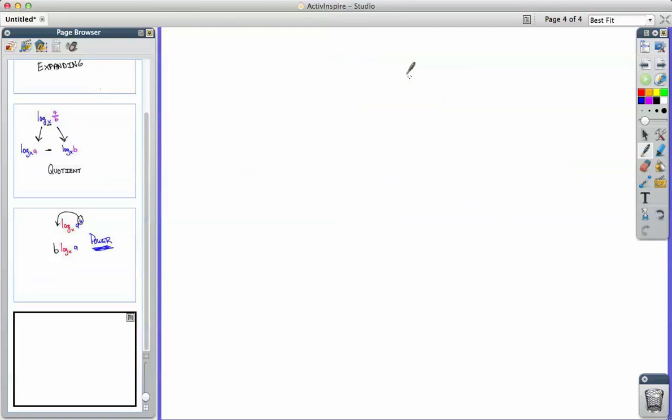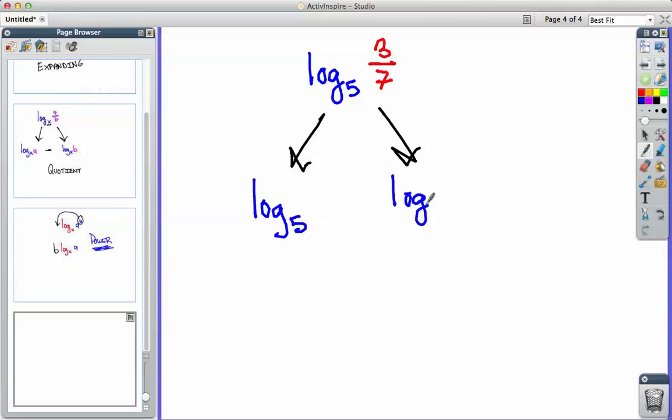We'll use real numbers now. Let's say you have log of 5. And the numbers in front of it are 3 over 7. Again there's two steps. You have log of 5 in both of them. Log of 5 in both of them. And since we are dividing you subtract. Dividing goes with subtract. On the one side you have the 3. And on the other side you have a 7.